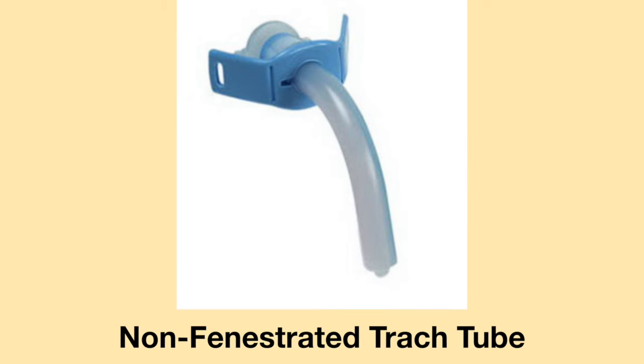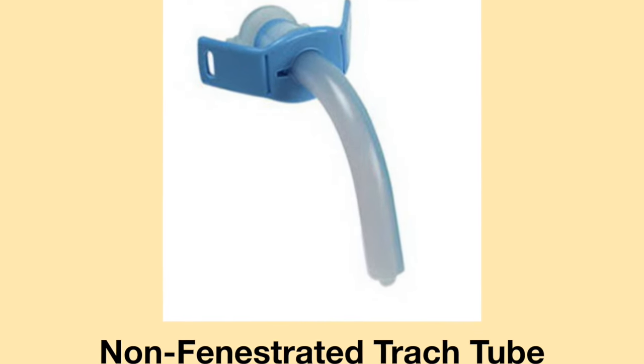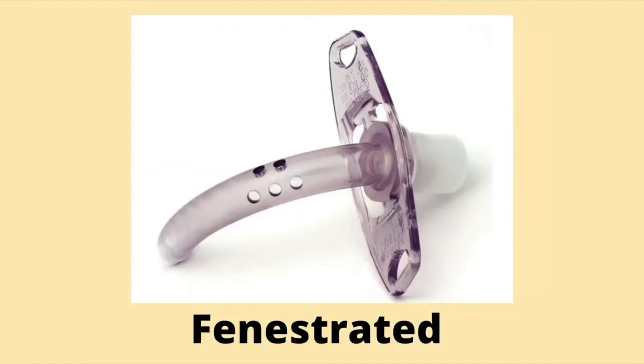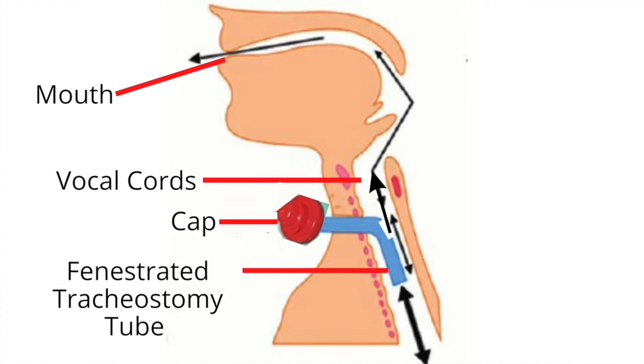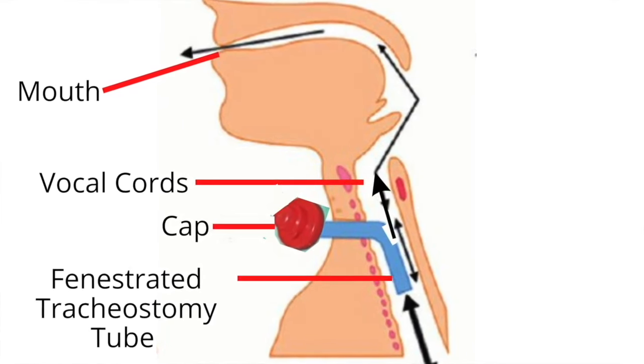Many patients are able to breathe and vocalize with non-fenestrated tracheostomy tubes. However, there may be times when a patient may benefit from using a fenestrated tracheostomy tube. To prepare for decannulation, a cap is placed on the end of the tracheostomy tube. If a patient is unable to manage capping with a non-fenestrated tracheostomy tube, a fenestrated tracheostomy tube may be trialed. A fenestrated tracheostomy tube reduces the work of breathing by allowing air to more freely pass up the trachea and out the nose and mouth.